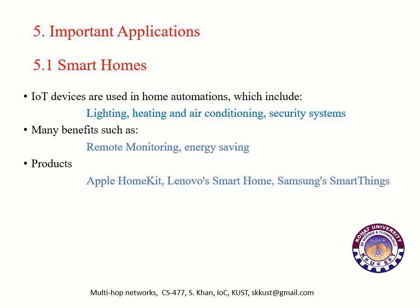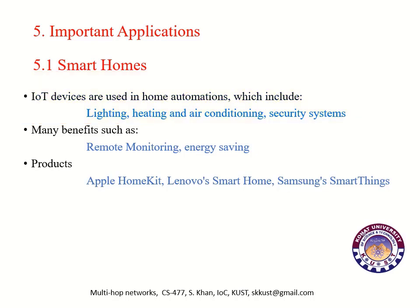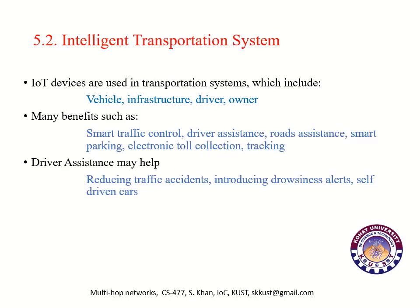Important Applications: IoT has many important applications. Number one, Smart Homes. IoT devices are used in home automation, which includes lighting, heating and air conditioning, and security systems. Home automation provides many benefits such as remote monitoring and energy saving. Products available for home automation include Apple HomeKit, Lenovo Smart Home, and Samsung SmartThings. These applications are used to automate different aspects of smart homes.